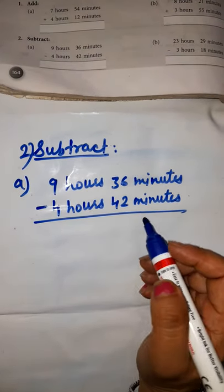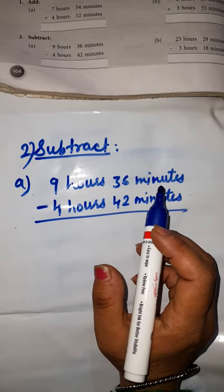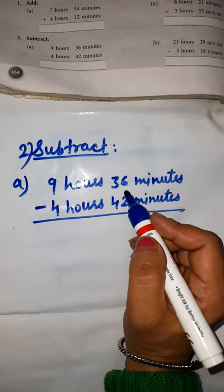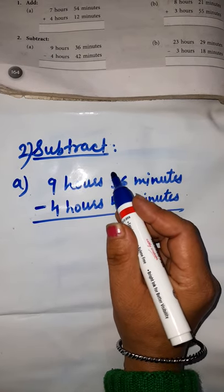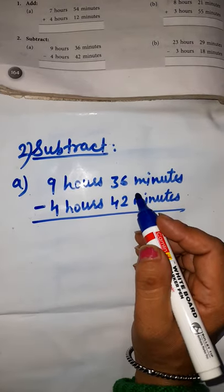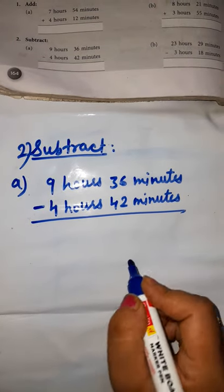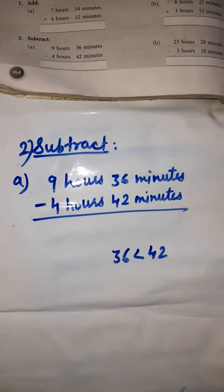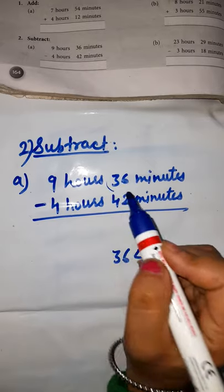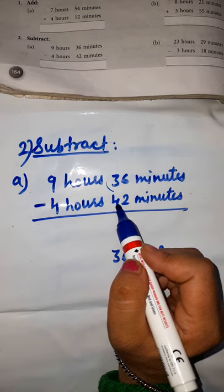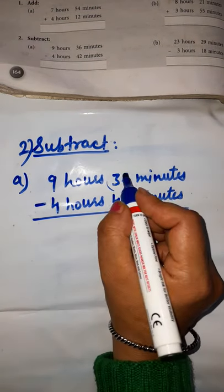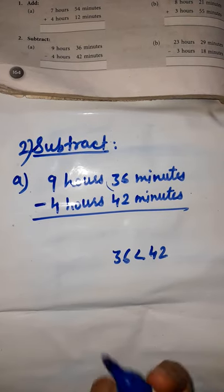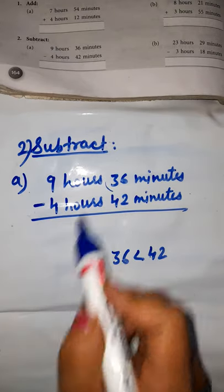Compare 36 and 42 — which one is greater? 42 is greater than 36, so we cannot subtract directly. We need to look at the whole number. Since 42 is greater than 36, we can't subtract. Now what we will do? We will borrow from the hours side.